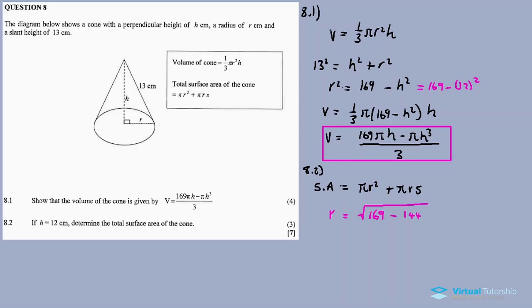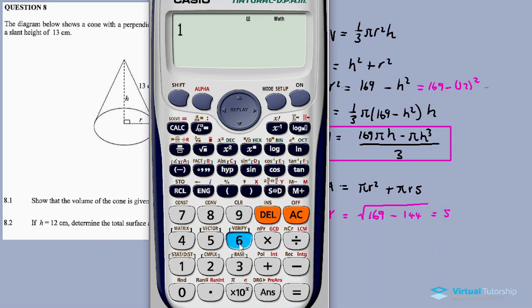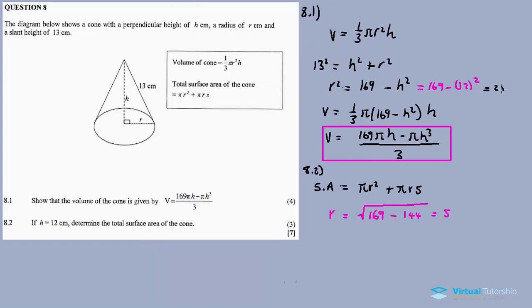So we substitute 169 minus 12 squared. Then R is equal to the square root of 169 minus 144. 12 squared is 144. 169 minus 12 squared is equal to 25. So our answer is 25. R squared is equal to 25, and then R is equal to 5.